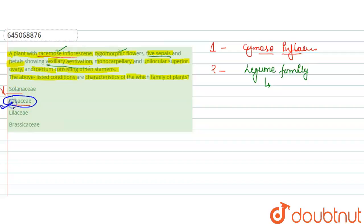So we can say that here the correct answer is option B. Let's see the rest of the options. Liliaceae family - if we talk about the Liliaceae family, that is option third.